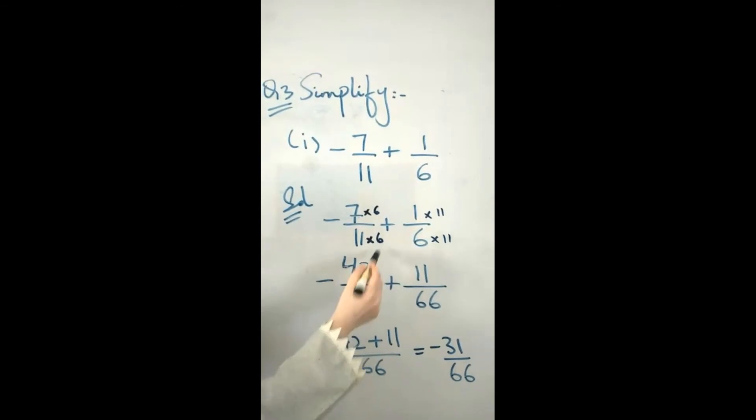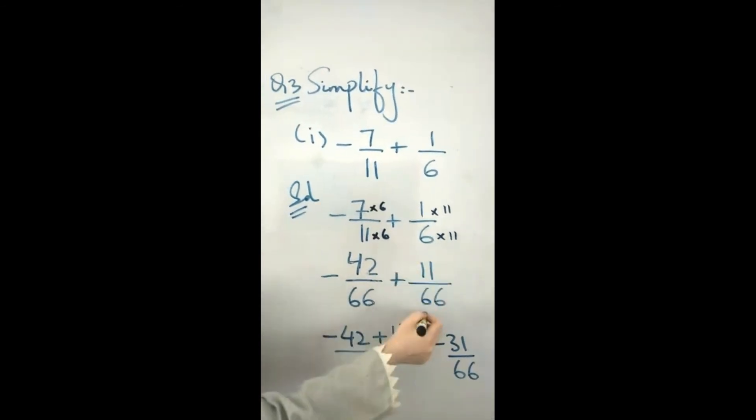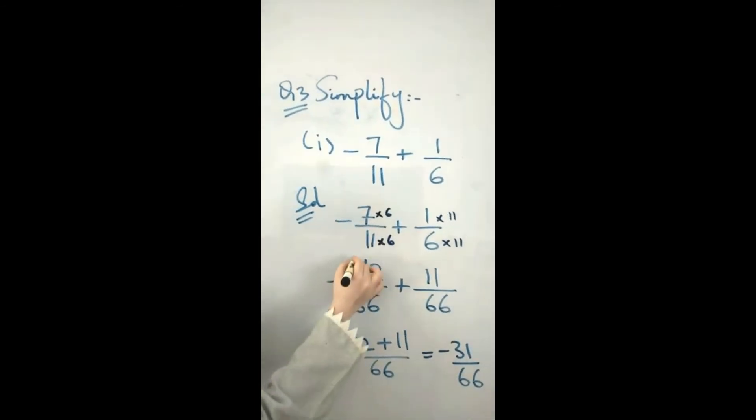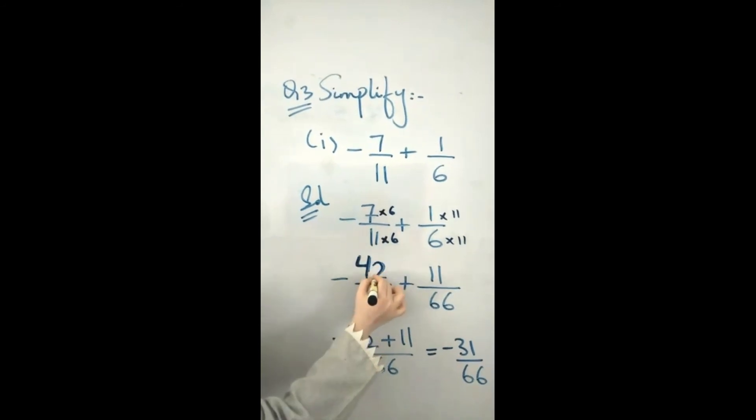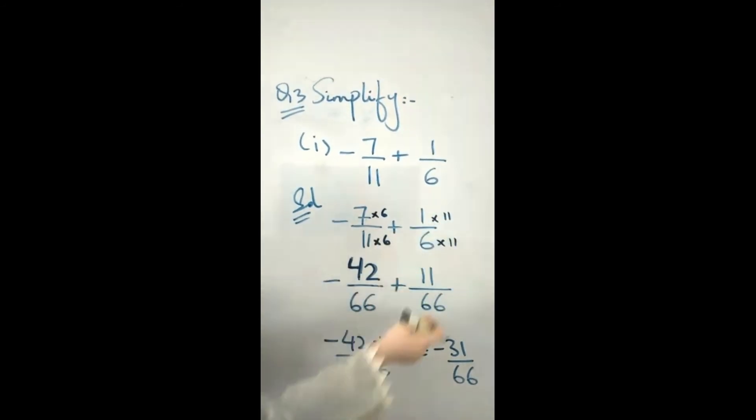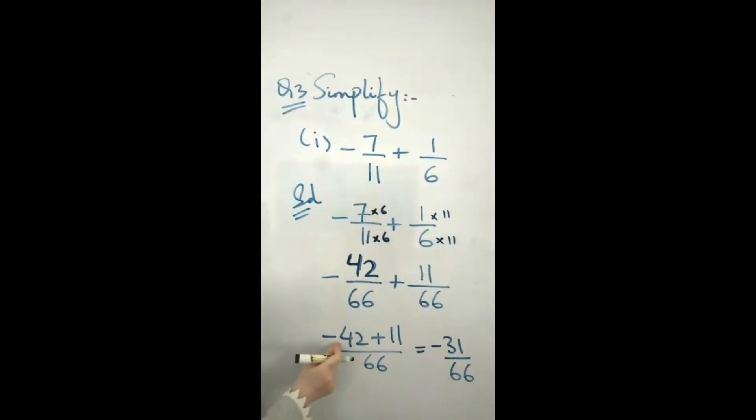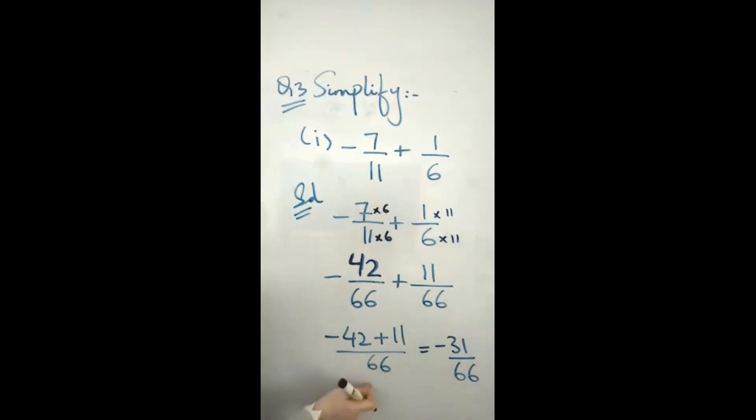11 multiplied by 6 equals 66. 6 multiplied by 11 equals 66. -7 multiplied by 6 equals -42. 1 multiplied by 11 equals 11. So we have -42/66 + 11/66. We have the same denominators.